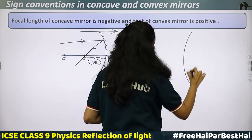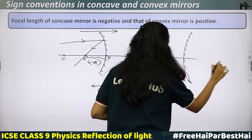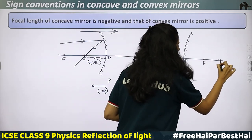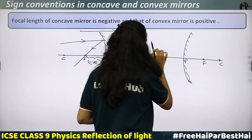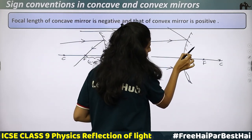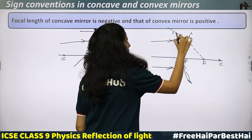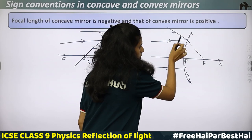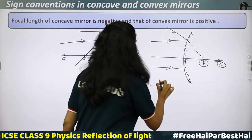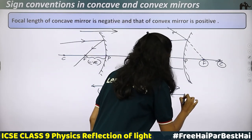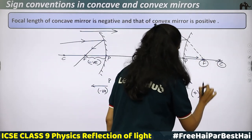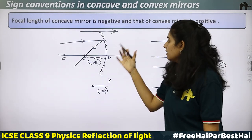For a convex mirror, the focus and center of curvature are behind the mirror — towards the right. A parallel light ray appears to diverge from the principal focus. The measurement from pole to focus is in the same direction as the incident light, so it is positive. Therefore, the focal length of a convex mirror is positive.